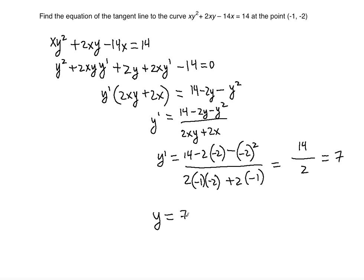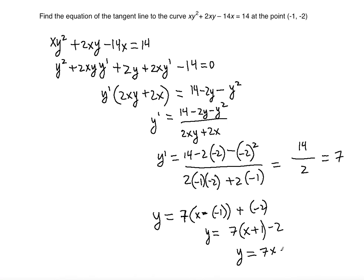So the slope is 7. Using point-slope form with the point (-1, -2): y = 7(x - (-1)) + (-2), which simplifies to y = 7x + 7 - 2, giving us y = 7x + 5. That's the equation of the tangent line to the curve xy² + 2xy - 14x = 14 at the point (-1, -2). I hope this tutorial was useful — please subscribe and I'll see you in my next video.